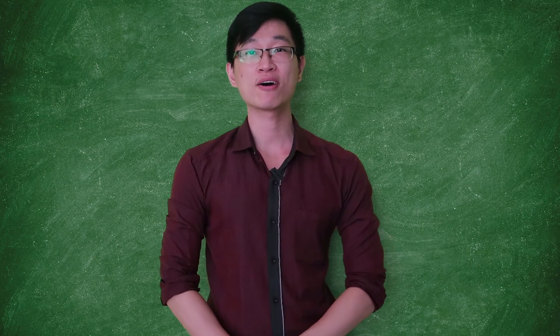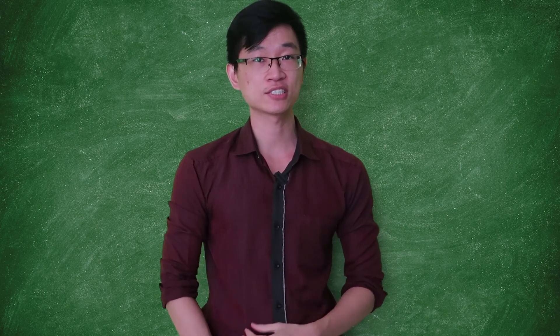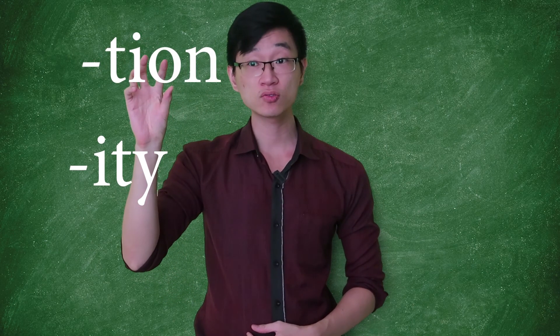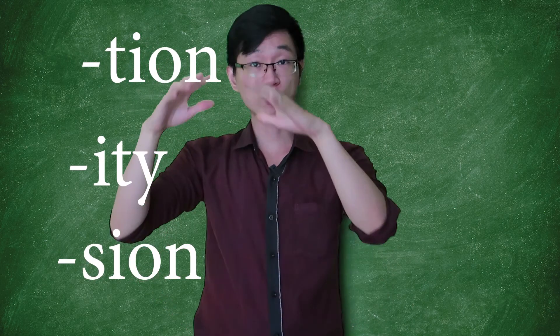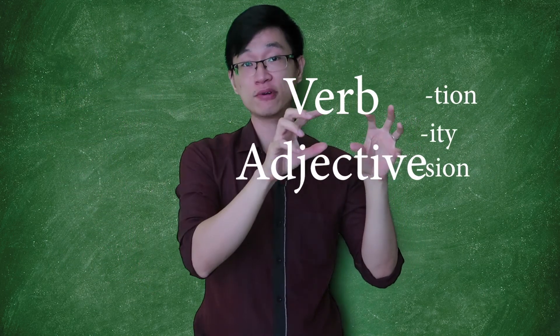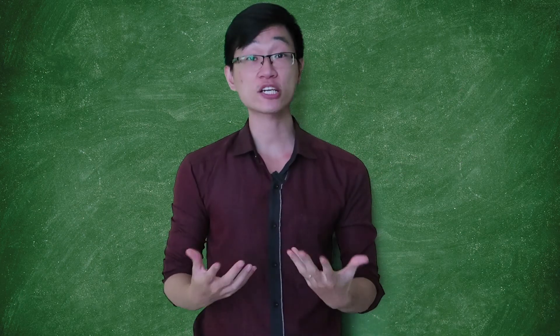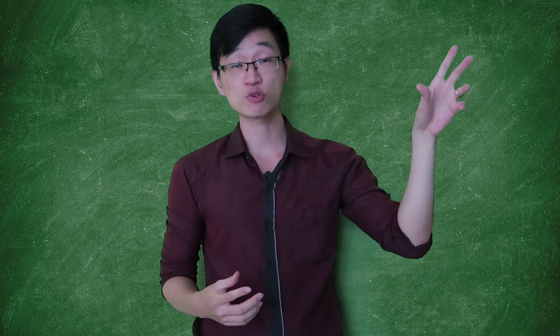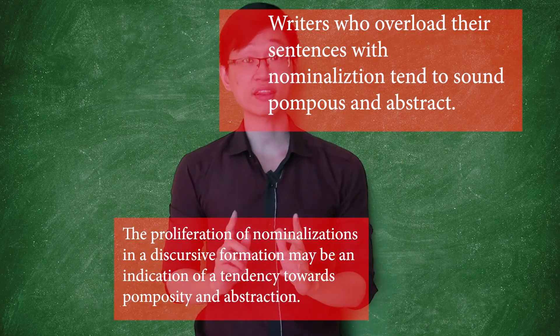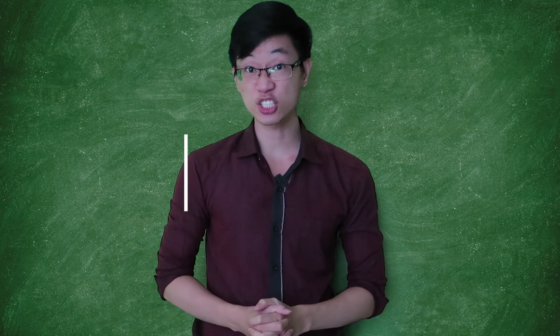Hi, Ethan here. Do you know about the suffixes such as IT or TION or SION? When we add those suffixes into an adjective or verb, we have a noun. A practice of changing a sentence with a lot of verbs and adjectives into a sentence with a lot of nouns like that, we call it nominalization.